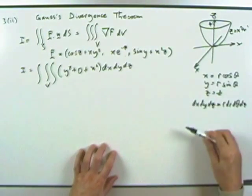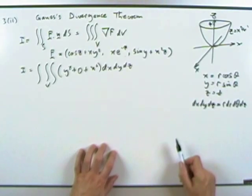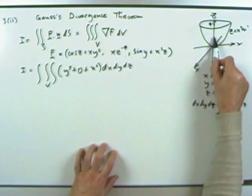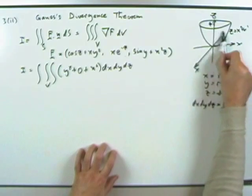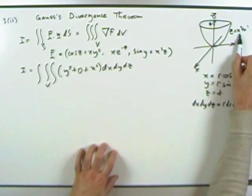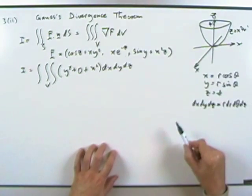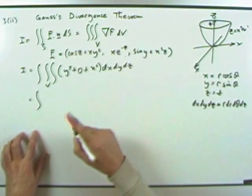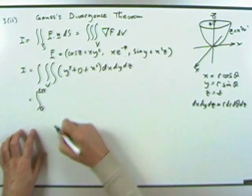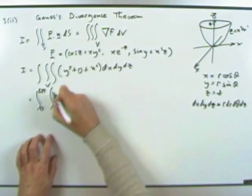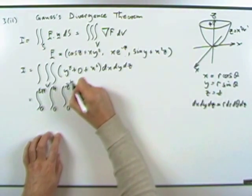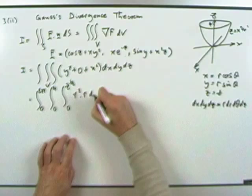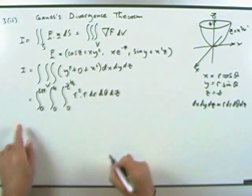The limits: z goes from 0 to 4, θ sweeps from 0 to 2π, and r goes from 0 to √z (since x² + y² = r² = z at the boundary). So x² + y² = r², and the full integral becomes the integral from 0 to 2π (dθ), 0 to 4 (dz), 0 to z^(1/2) of r² · r dr dθ dz.